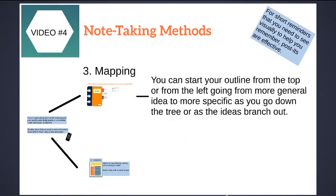Next thing, the third thing we have is mapping. With mapping, you can start your outline from the top or the left, going from more general idea to more specific as you go down the tree or as the ideas branch out. If you think about something like a genealogy tree, you start from the top and you have a general idea, and you move more specific down as you go. That's another method that you can use for note-taking, is to map things out. Or you can use something like a mind map to map things out. That way when you look at something, you understand the process better.